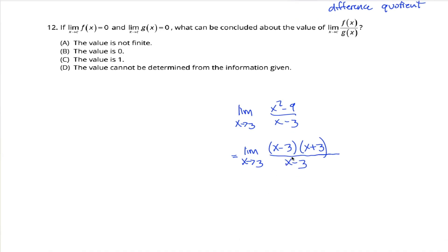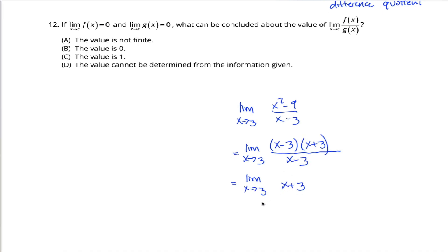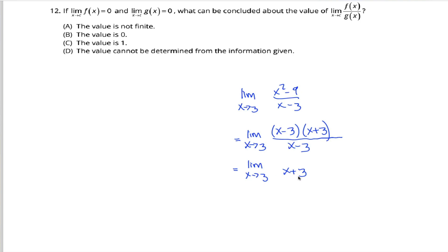And when we're evaluating limits, we're allowed to cancel out these terms that have our variable in there. So this is just the limit as x approaches 3 of x plus 3. This x minus 3 and this x minus 3 cancel out. What's the limit as x approaches 3 of x plus 3?